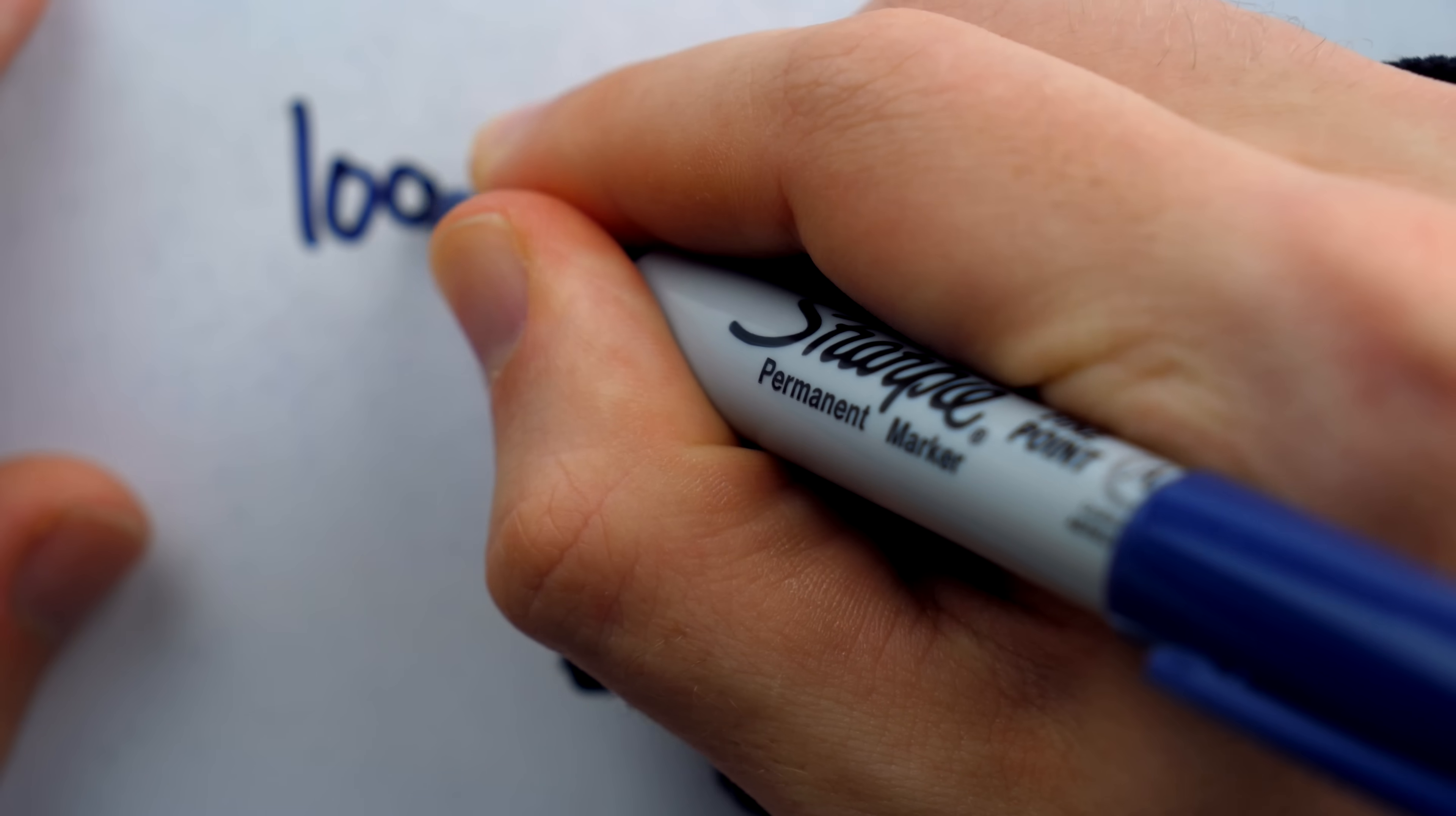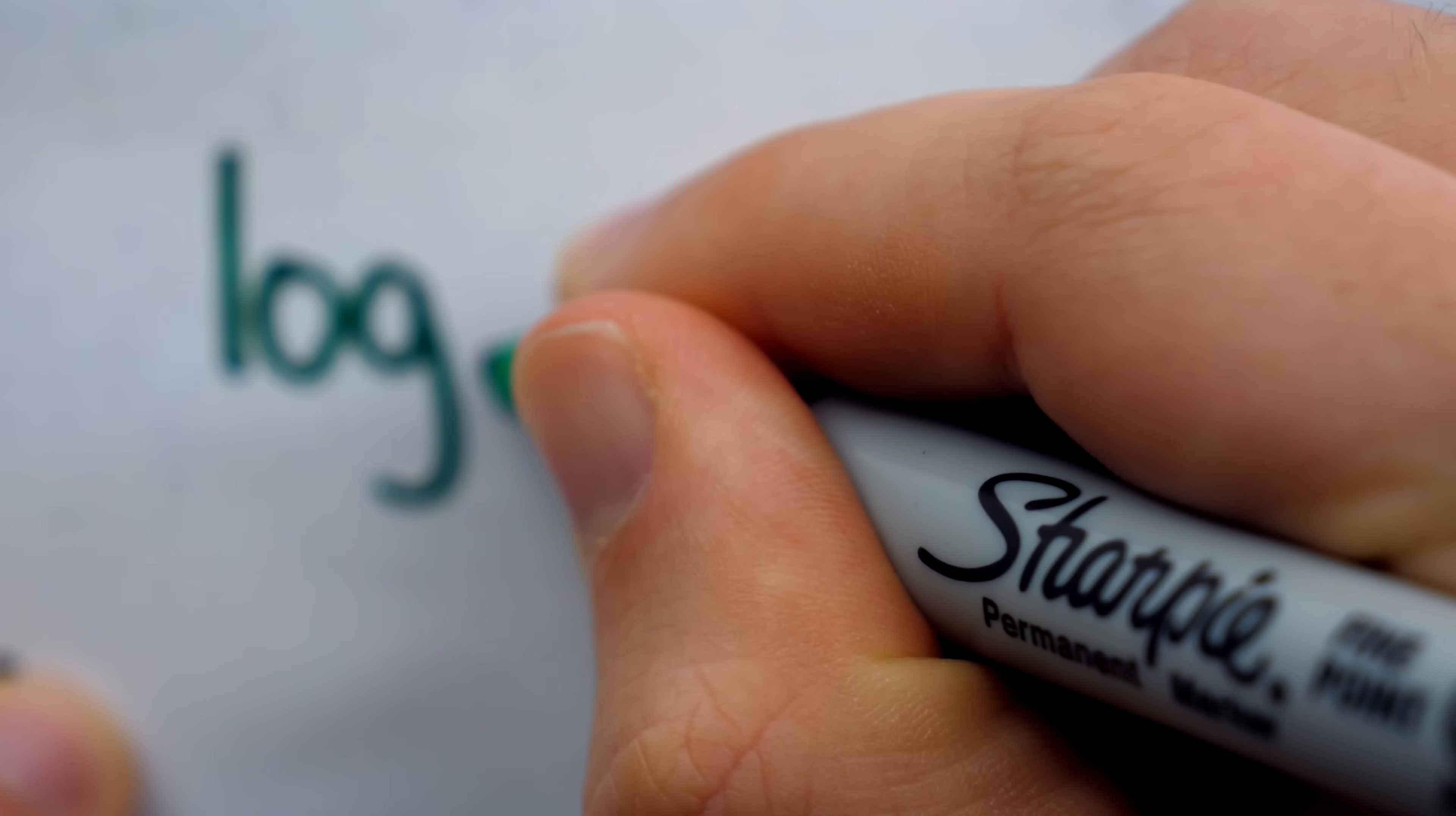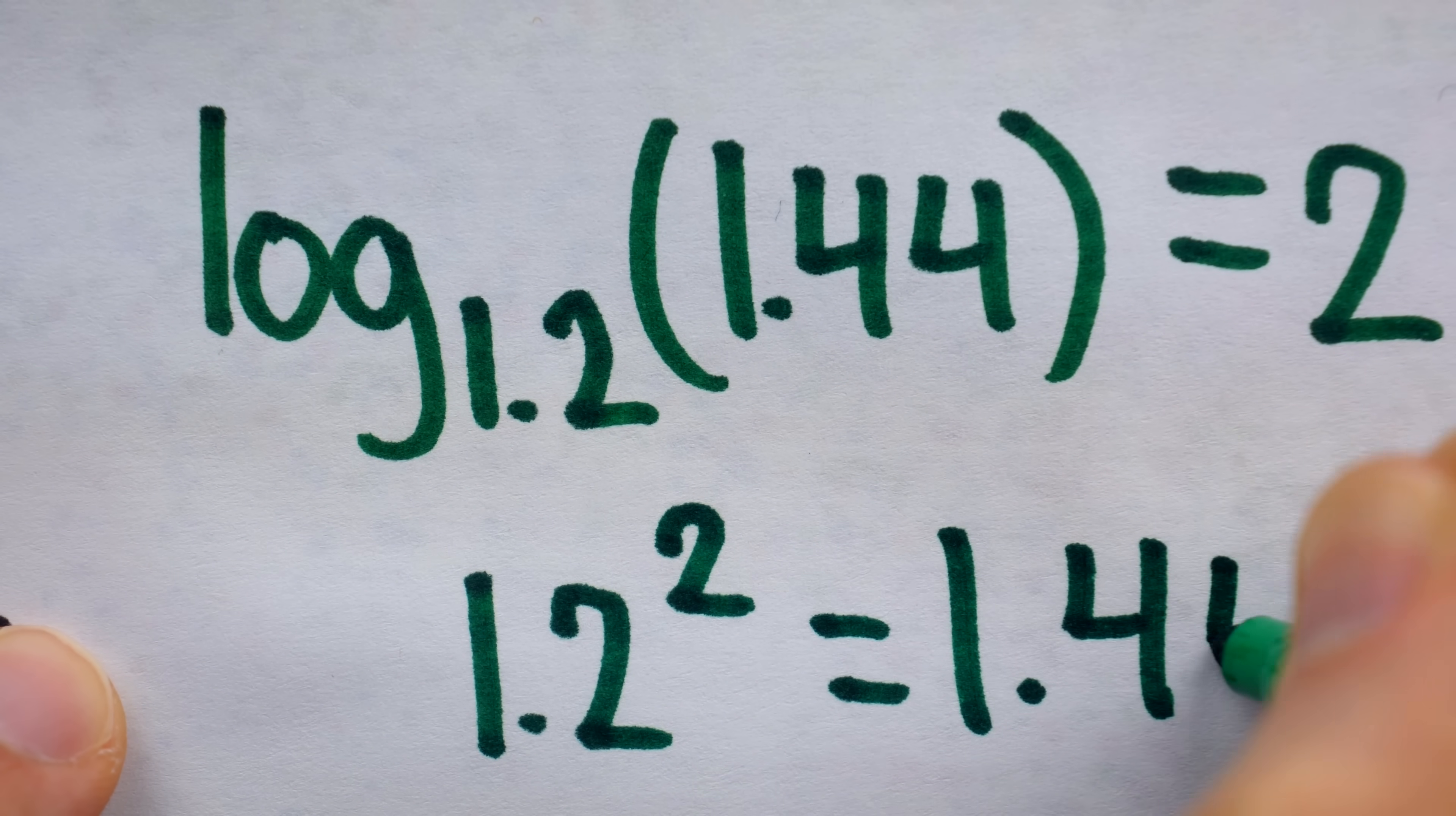If we put 10,000 into the base 10 logarithm, we get an answer of 4, because that base of 10 to that exponent of 4 gives us this input of 10,000. An example with the 1.2 base is that the base 1.2 log of 1.44 is equal to 2. This is because if we take that base of 1.2 and square it, we get that input of 1.44.